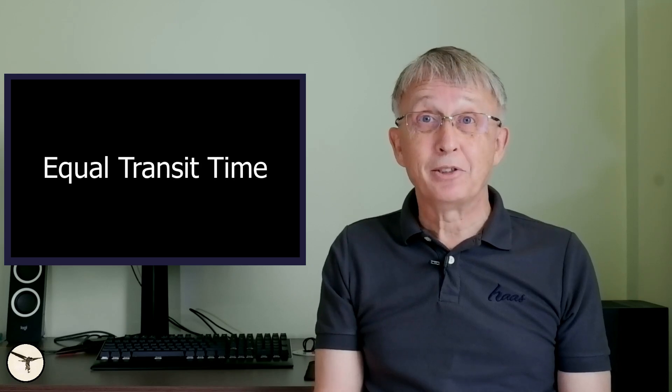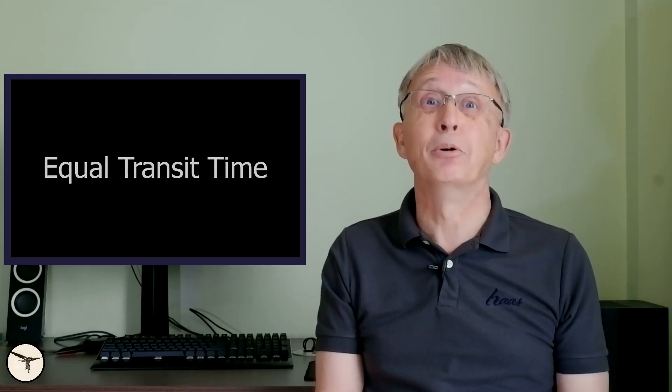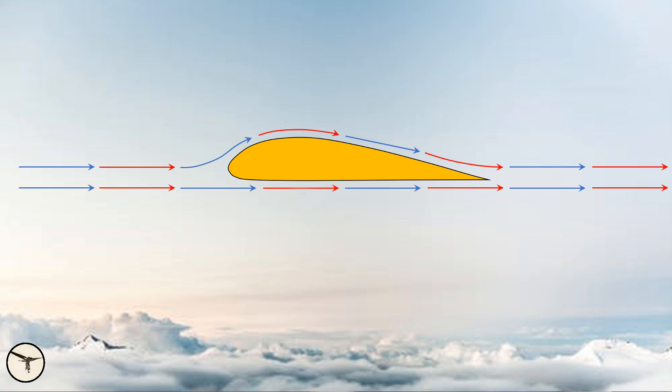The equal transit time hypothesis have been told to pilots and kids in science classes all over the world. The idea is that the air going above the wing has a longer path to travel due to the curved shape. So the air parcels going over the top must travel faster in order to meet the air parcels that went underneath the wing at the same time. And in accordance with Bernoulli's equation, a higher velocity over the wing results in a reduction of the static air pressure, which is lift.